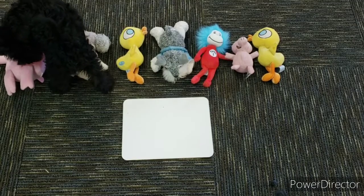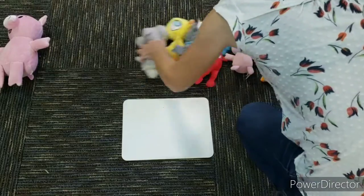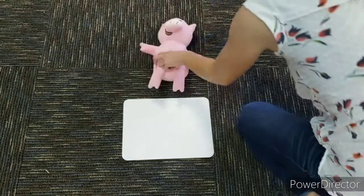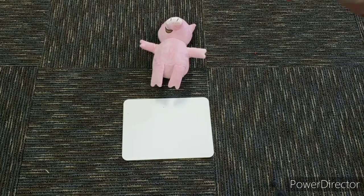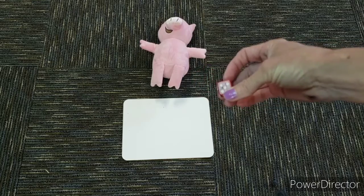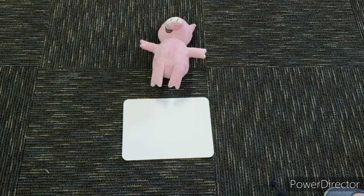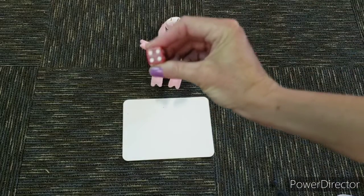Okay, so what you're going to do is you're going to start off with just one stuffy. So I'm going to start off with my piggy stuffy. And what I'm going to do is I'm going to take a dice. You also need your dice, your die. And you're going to roll it. All right, so I rolled the number four.